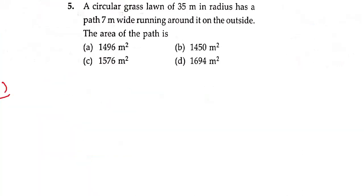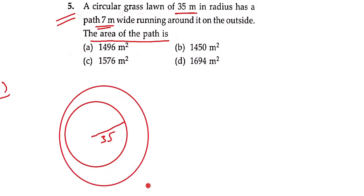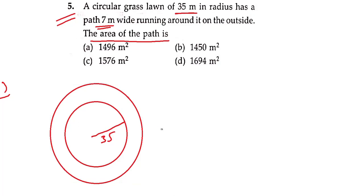Question number 5: A circular grass lawn of 35 metres radius has a path 7 metres wide running around it on the outside. The area of the path is — पहले तो हमें diagram निकालनी पड़ेगी। Circle लेते हैं जिसकी radius 35 metres है। उसके around एक path है 7 metres wide का। उसके बाजू में हमें एक और बड़ा circle निकालना पड़ेगा। यह distance है 7 metres।